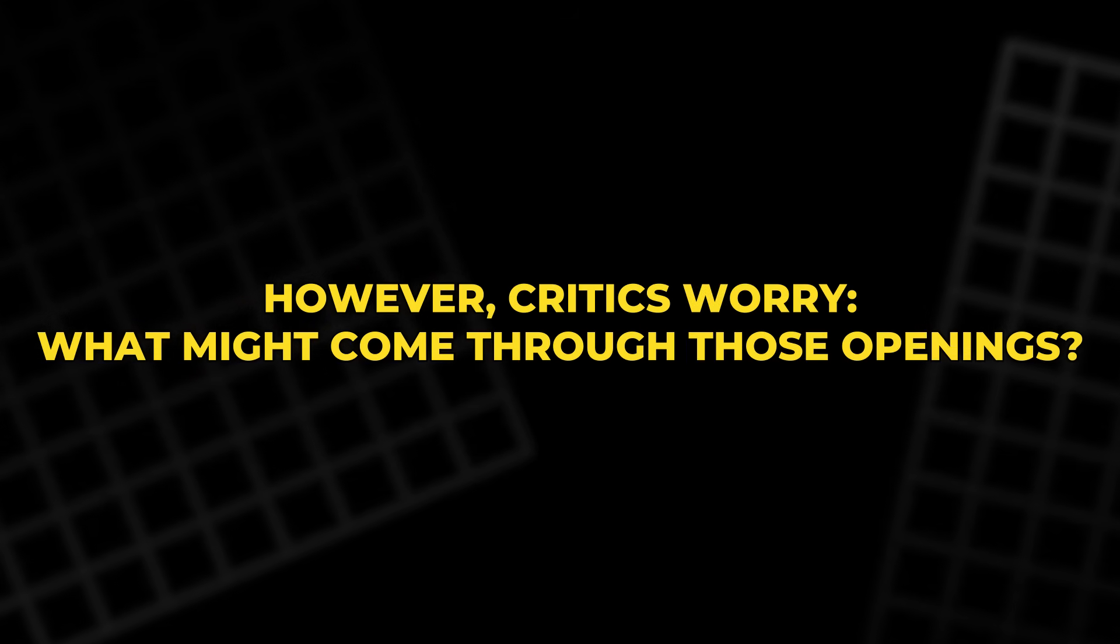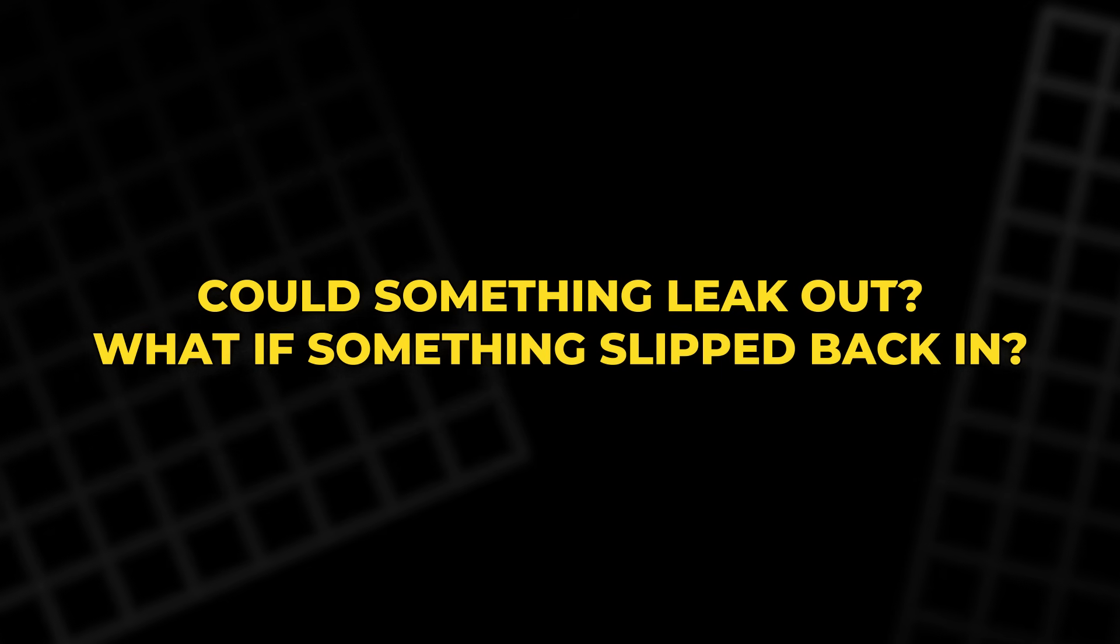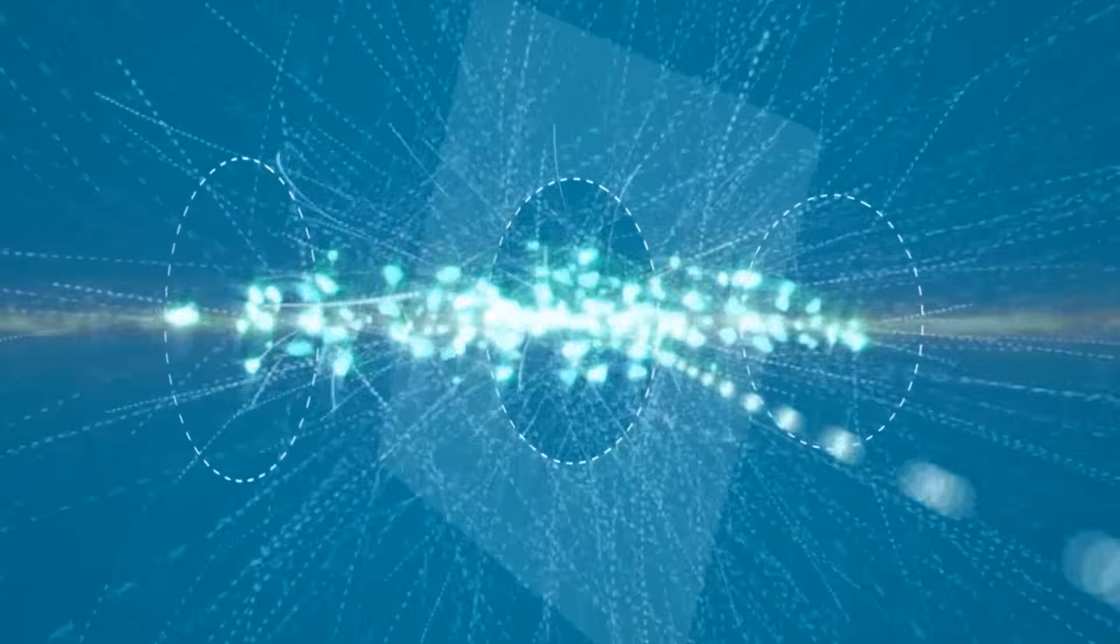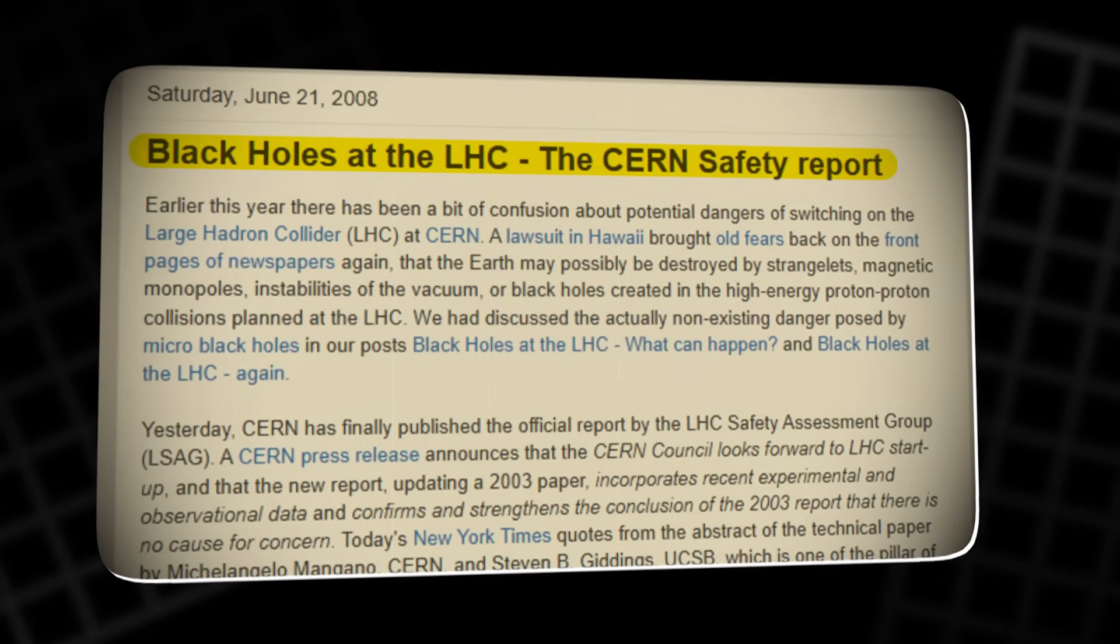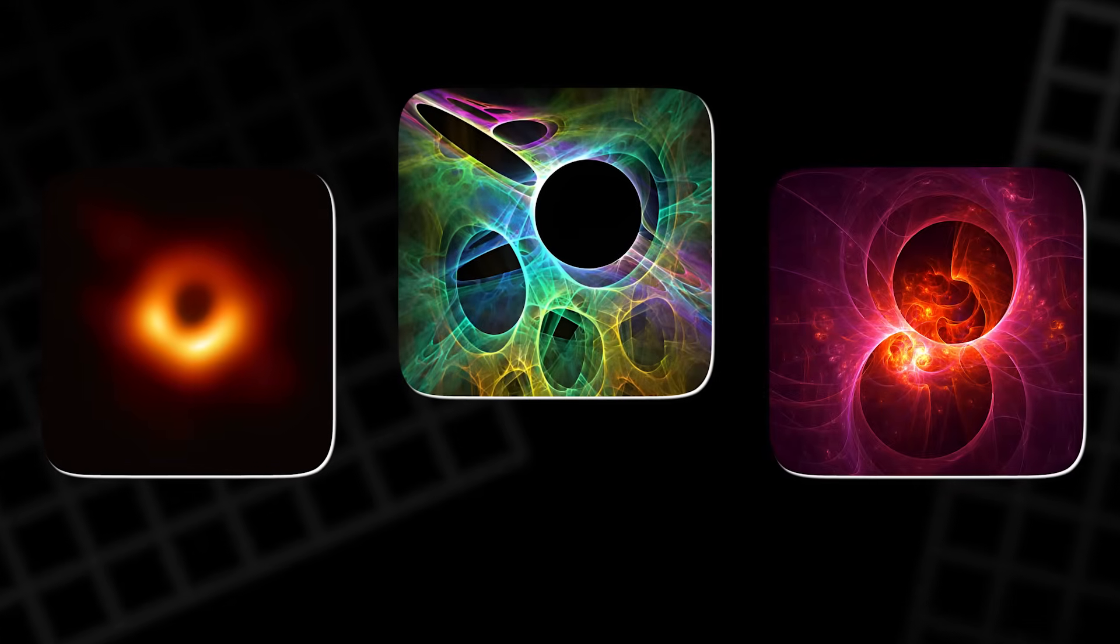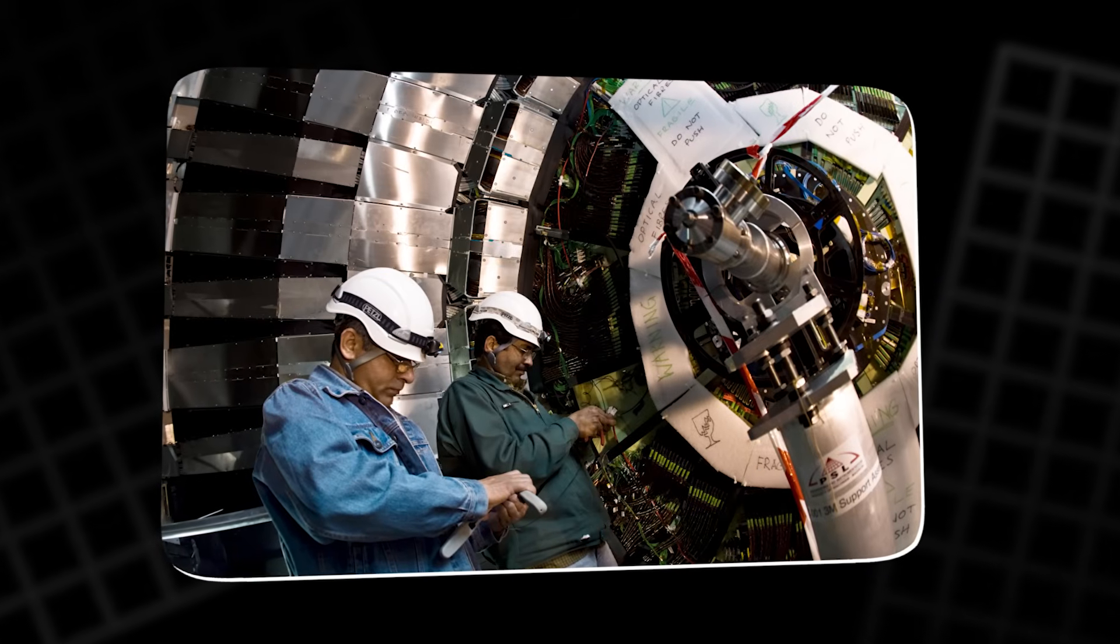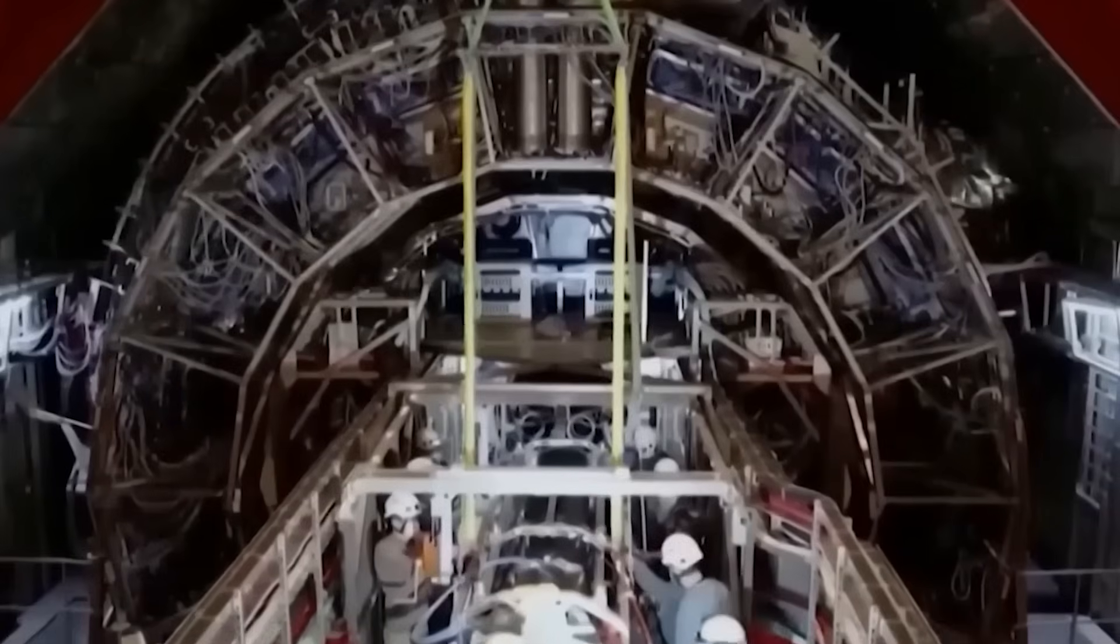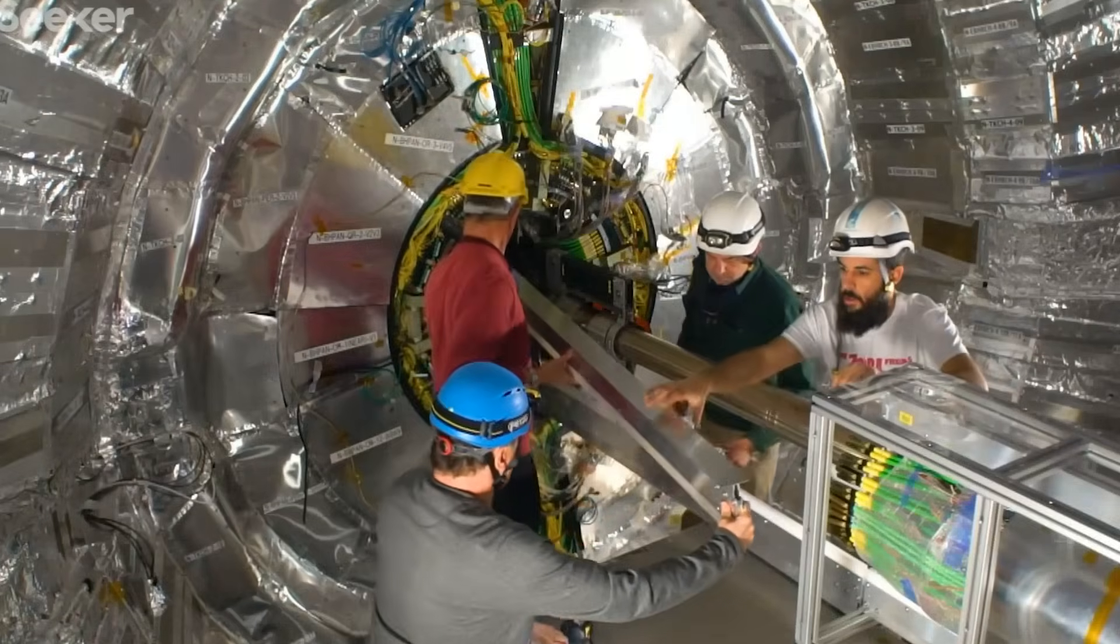However, critics worry: What might come through those openings? Could something leak out? What if something slipped back in? These notions terrified the public and fascinated scientists at the same time. In 2008, CERN even published a formal safety report to address these and related fears: black holes, extra dimensions, and vacuum decay. While the official conclusion was that the LHC was safe, the very need for such a report illustrates just how uneasy people, even experts, felt about what these experiments might unleash.